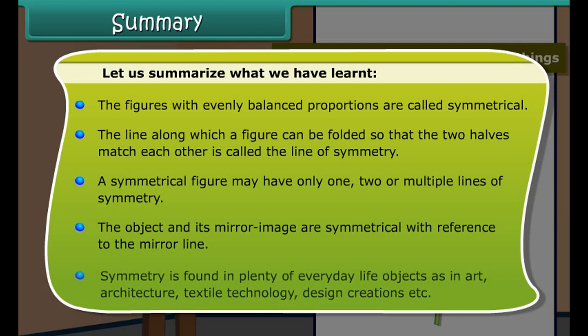Let us summarize what we have learned. Figures with evenly balanced proportions are called symmetrical. The line along which a figure can be folded so that the two halves match each other is called the line of symmetry. A symmetrical figure may have only one, two, or multiple lines of symmetry. The object and its mirror image are symmetrical with reference to the mirror line. Symmetry is found in plenty of everyday life objects, as in art, architecture, textile technology, design, construction, and more.